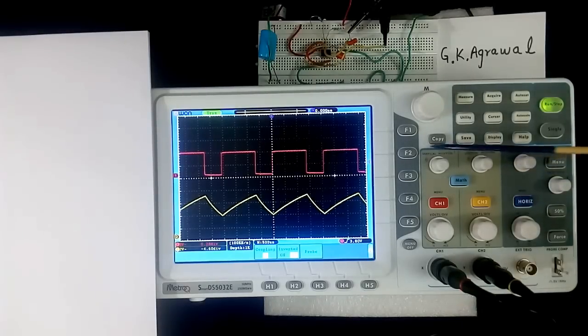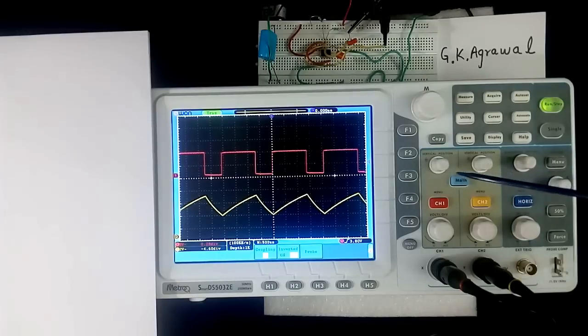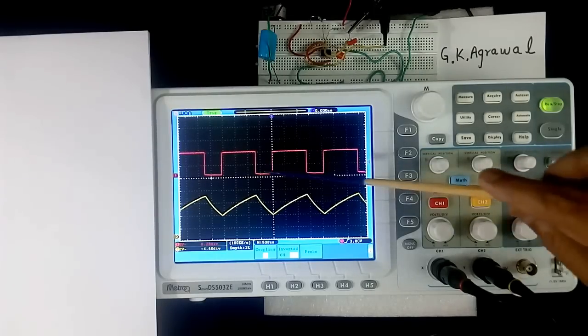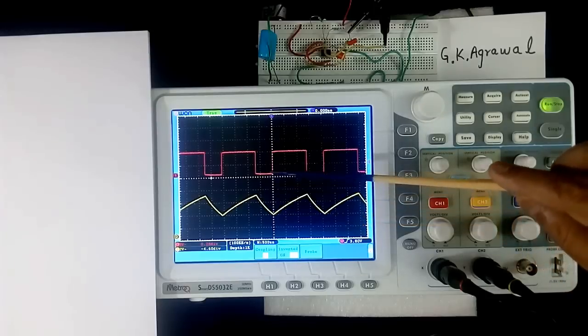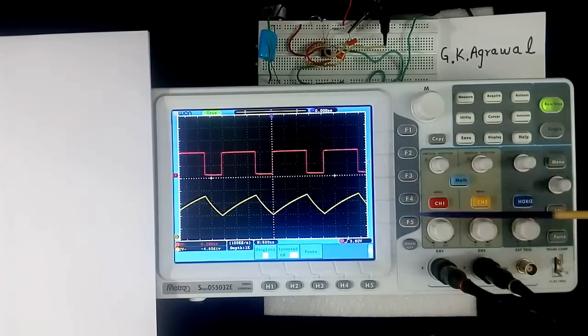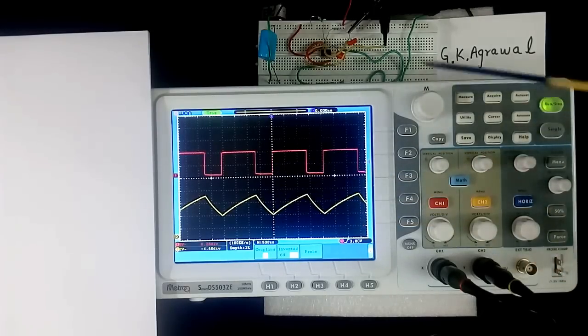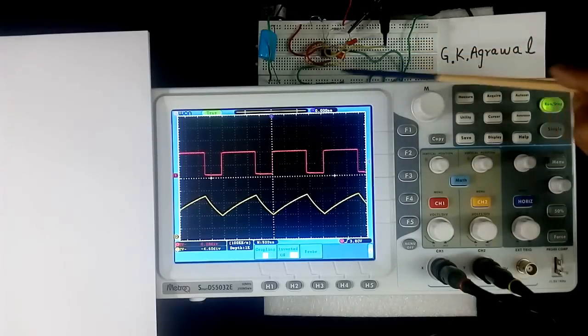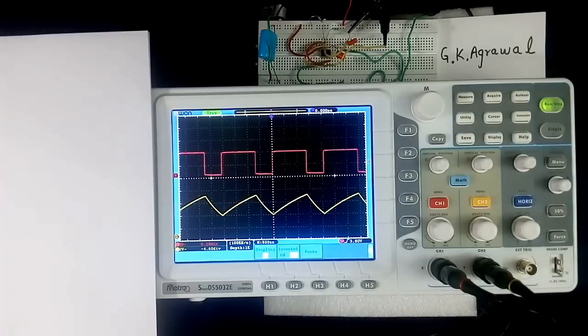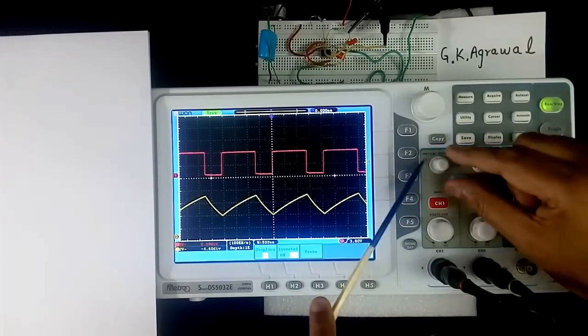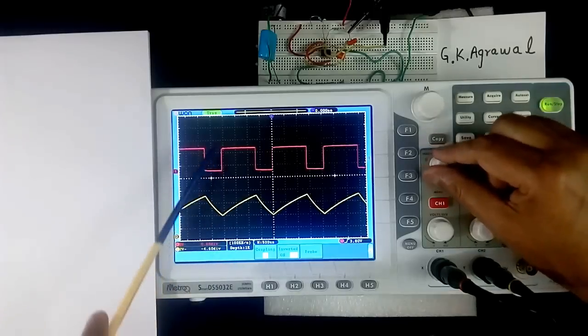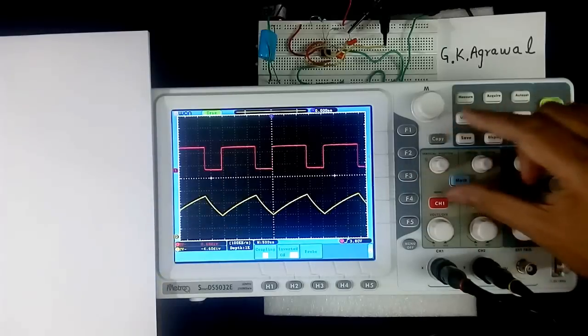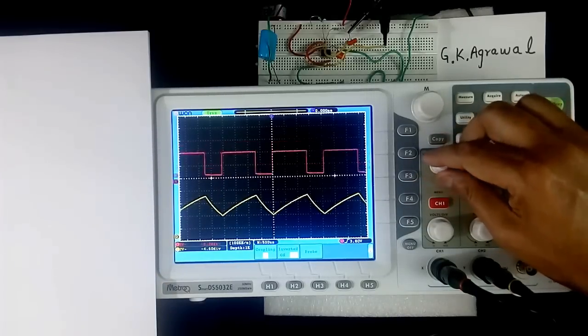Now we come to vertical position shift control. These are 2 knobs. Separate for both channel. Using this, we can shift the wave shape. These 2 wave shapes are 2 inputs. I am generating these 2 wave shapes using one simple triple 5 circuit. Now when we move this knob, whole wave shape will shift up and down. This is vertical position control.